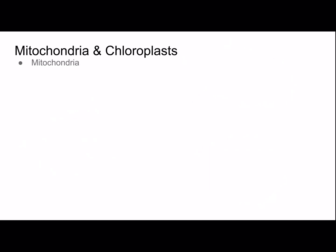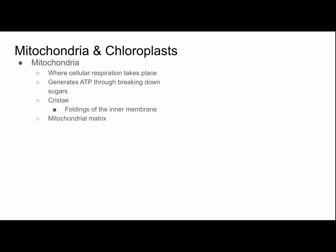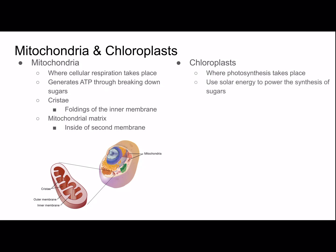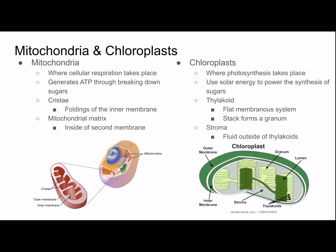Mitochondria and chloroplasts — mitochondria are where cellular respiration takes place; it generates ATP through breaking down sugars. The cristae are the foldings of the inner membrane, and the mitochondrial matrix is the inside portion of the second membrane. Mitochondria are in both plant cells and animal cells. Chloroplasts are only in plants; it's where photosynthesis takes place. They use solar energy to power the synthesis of sugars. They have thylakoid, which is a flat membranous system, and the stack forms a granum. Stroma is the fluid outside of the thylakoids. We'll talk a lot more about cellular respiration and photosynthesis in future videos.